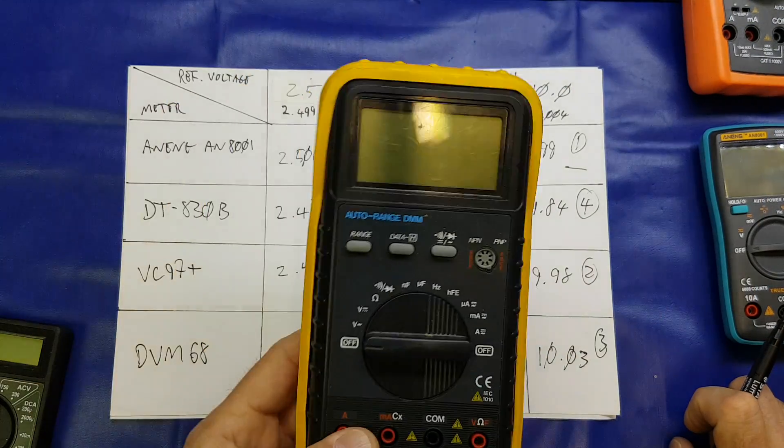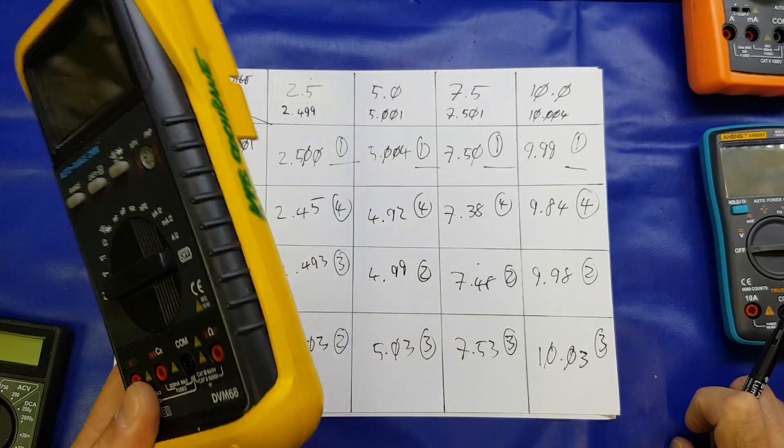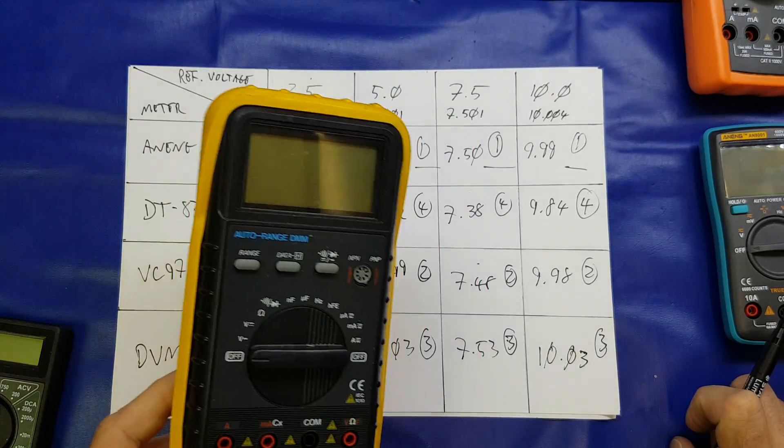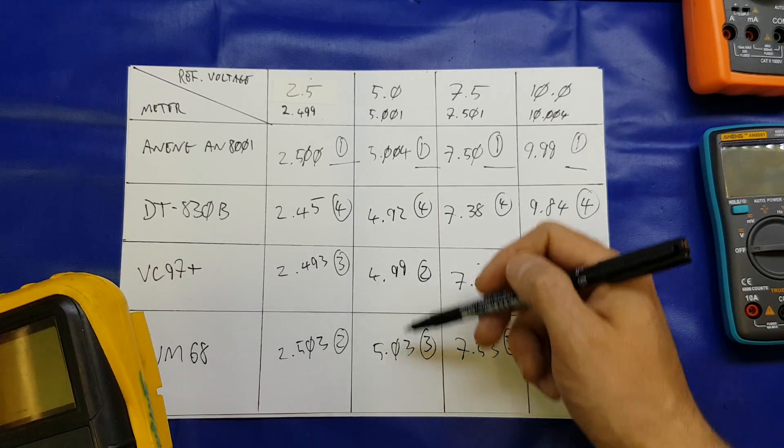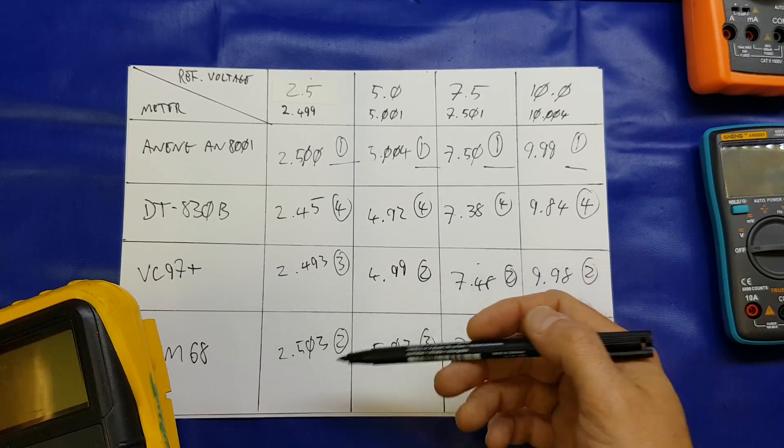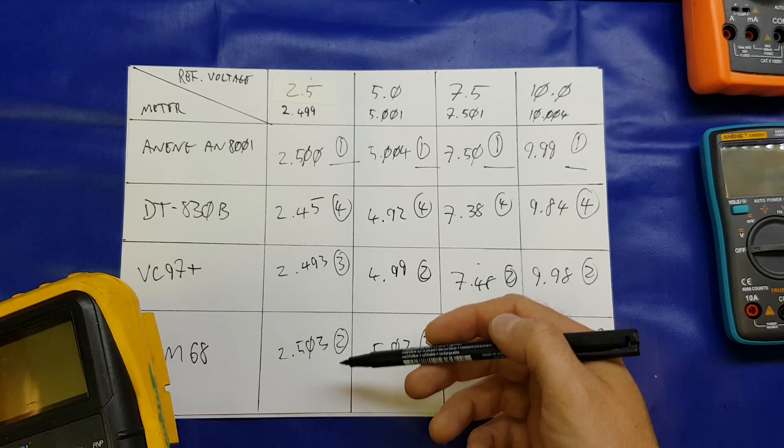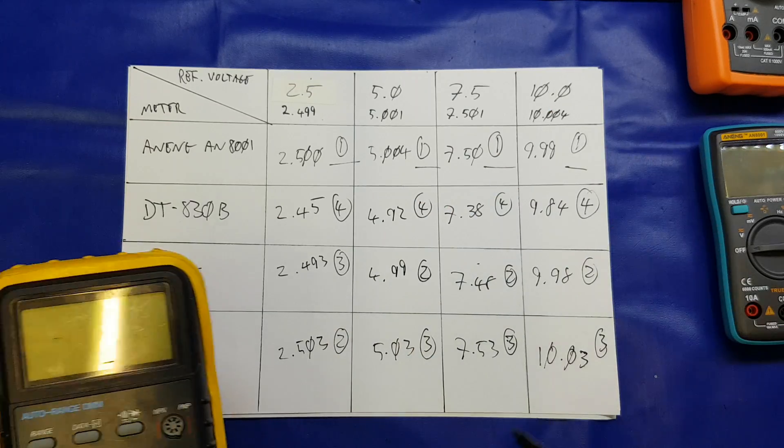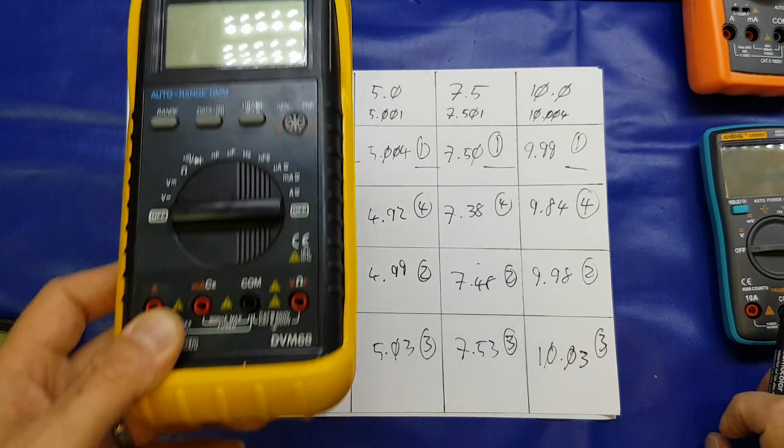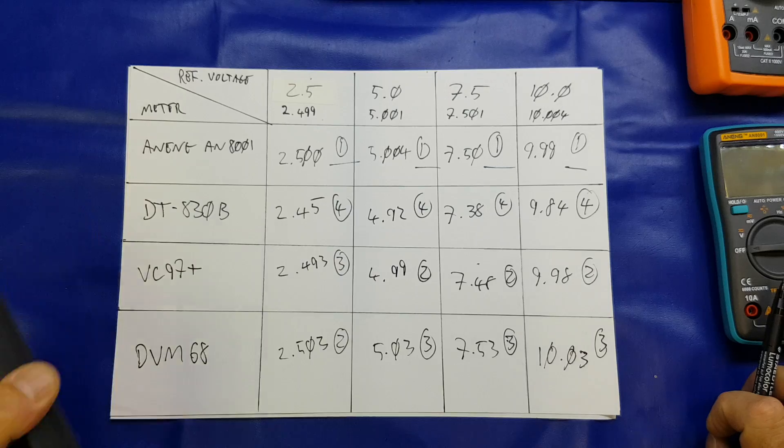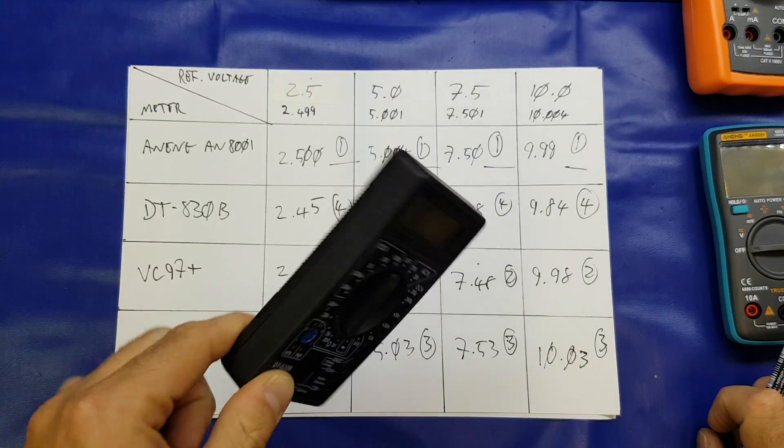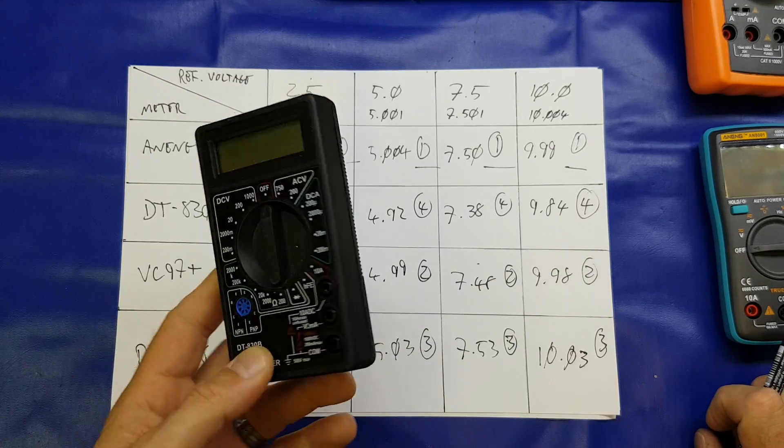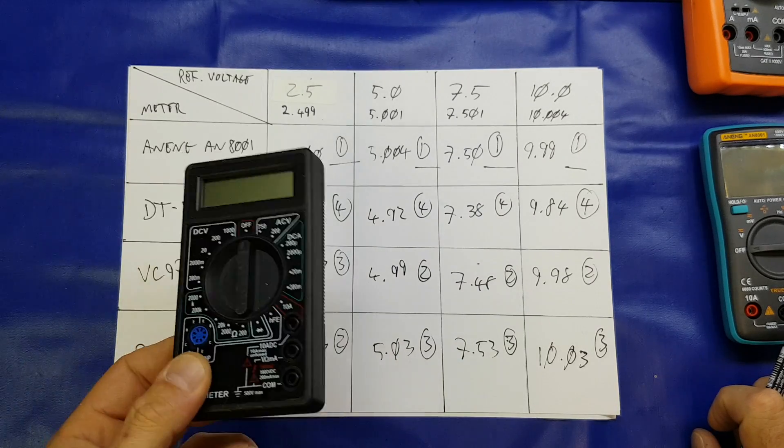Yeah, the old 10, 15 year old Velleman, it's still fairly accurate, not too much in it, 0.03 of a volt, 0.004 of a volt, whatever, fairly accurate for an older meter. And last place is the two and a half quid 830B, you'd expect it to be in last place, it is a really super budget meter.